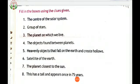Fourth, the objects found between planets. The asteroid belt is a torus shaped region in the solar system located roughly between the orbits of planets Jupiter and Mars that is occupied by a great many solid irregularly shaped bodies of many size but much smaller than planets called asteroids.